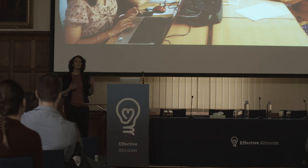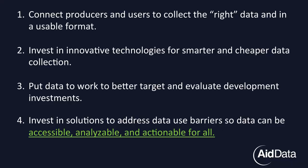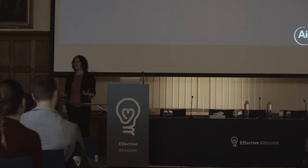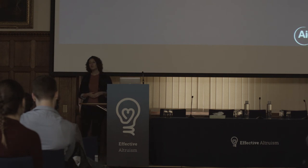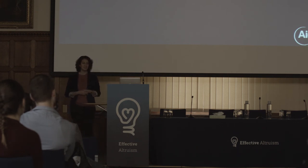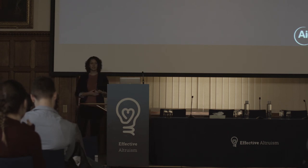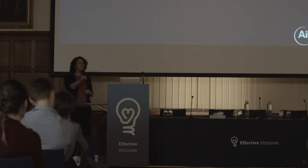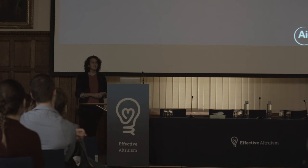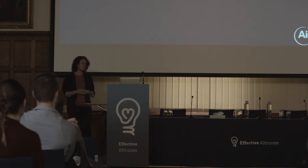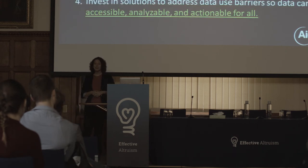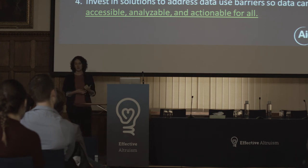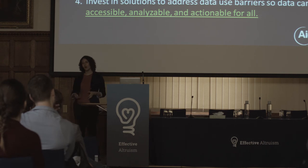To summarize: First, it's critical that we connect data producers and data users and create better feedback loops so we're collecting the right data in accessible formats. Second, we need to invest in innovative technologies to fill data gaps on development progress through smarter and cheaper collection methods. Third, we need to put the data we collect to work — targeting development aid investments to reach the populations that need them most, and evaluating more programs to build a bigger body of evidence on what works in international development. And finally, we need to invest in solutions to address significant barriers to data use, making data accessible, analyzable, and actionable for all people. Thank you.